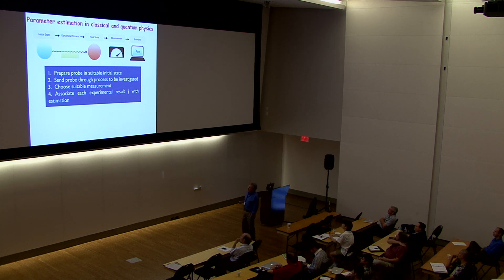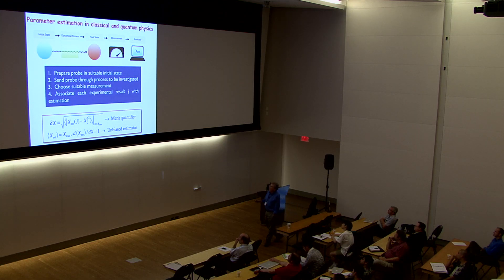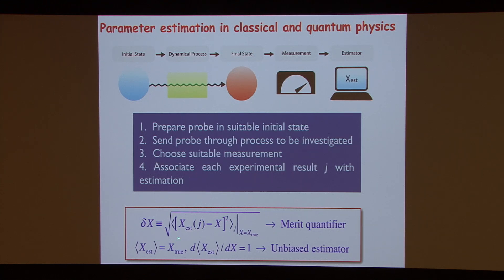The idea of parameter estimation in classical and quantum physics is the following. You have some dynamical process dependent on some parameter, and you want to estimate this parameter. You first prepare the probe in some suitable initial state, then send the probe to the process to be investigated, choose a suitable measurement, and associate each experimental result, say J, with some estimation of the parameter. You need a merit quantifier: the standard deviation between the estimated value and the true value of the parameter. We will consider unbiased estimators, whose average coincides with the true value of the parameter.